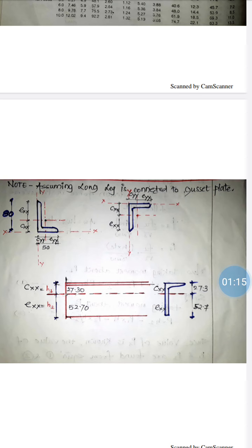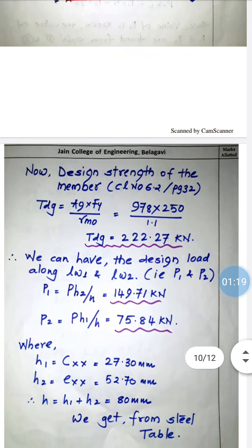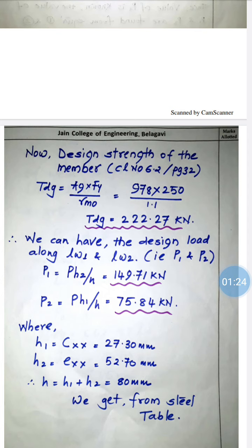We need to find the design strength of the member as per Clause 6.2, Page 32 of IS 800 — design strength based on yielding of the gross section. Tdg = Ag × fy / γm0. The gross area Ag = 978 mm² from the steel table. So Tdg = 978 × 250 / 1.1 = 222.27 kN. This is the total force the member can carry.